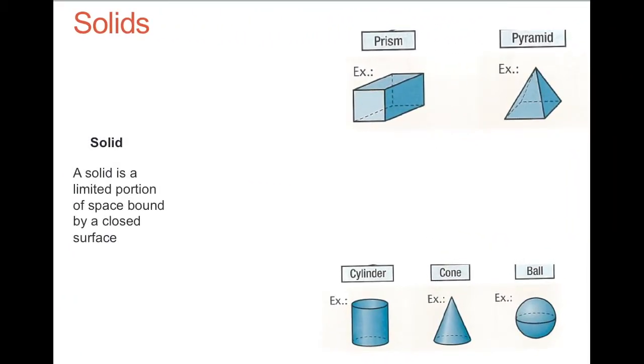A solid is a limited portion of space bound by a closed surface. It can be divided into two things: a polyhedron and a curved round body solid.